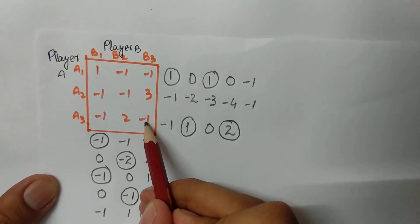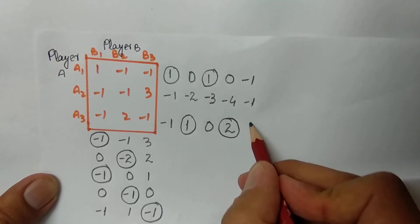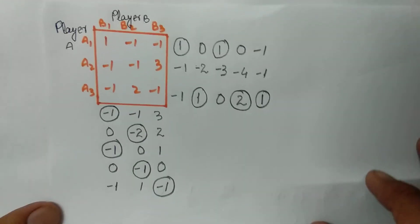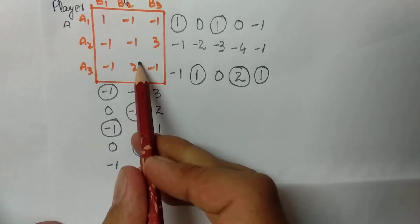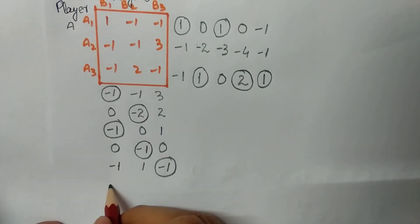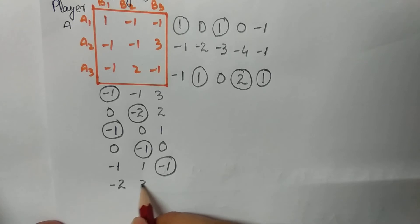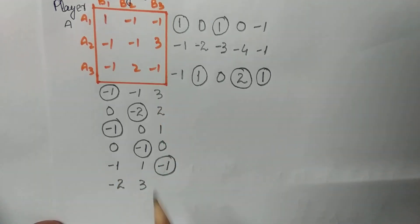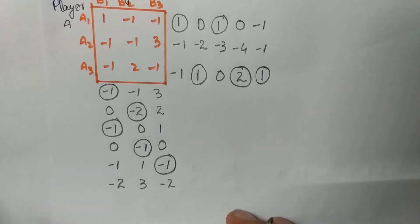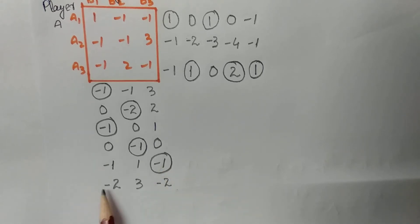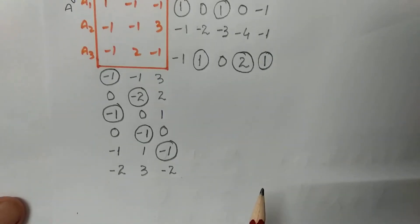Continuing: minus one plus two equals one. Encircle the largest element. Corresponding to this is that row. Adding: −1 + (−1) = −2, 2 + 1 = 3, −1 + (−2) = −3 (approximately). There is a tie again: minus two, minus two, minus two. Choose the row different from the last choice, and proceed.